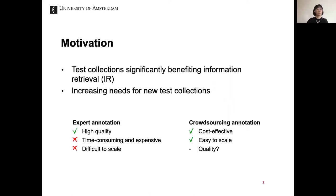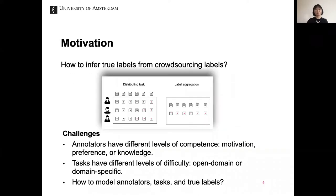Crowdsourcing has become an effective solution for labeling. It is cost effective and most importantly easy to scale. However, the quality of crowd labels can be good or bad due to many factors. Therefore, label aggregation plays an important role in improving label quality of datasets.